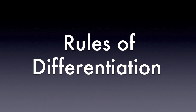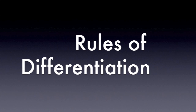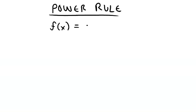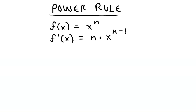So what are the rules of differentiation? First up is the power rule. If some function of x is equal to x to the power of n, then the derivative of the function is n multiplied by x to the power of n minus 1.